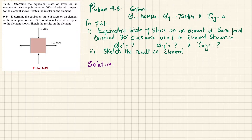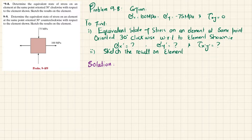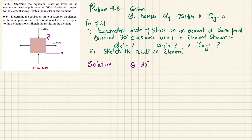What we have to find is the equivalent state of stress on the element oriented 30 degrees clockwise — that is sigma x dash, sigma y dash, and tau x dash y dash — and also sketch the result on the element. Since the rotation is clockwise, theta is taken as negative, so theta equals minus 30 degrees.